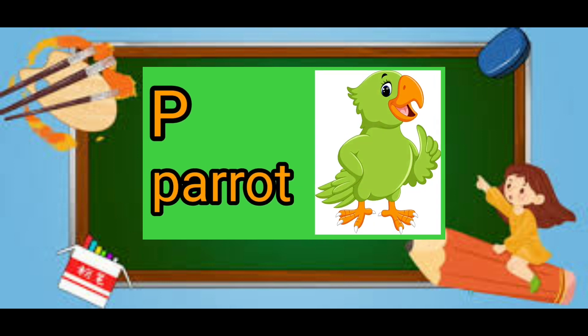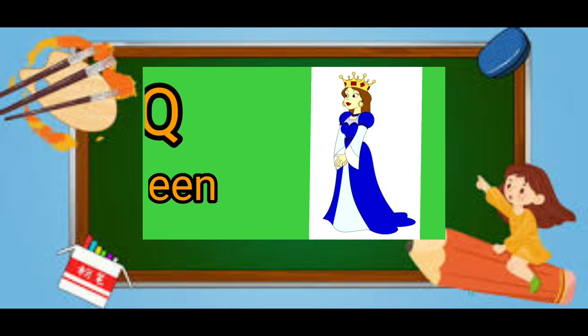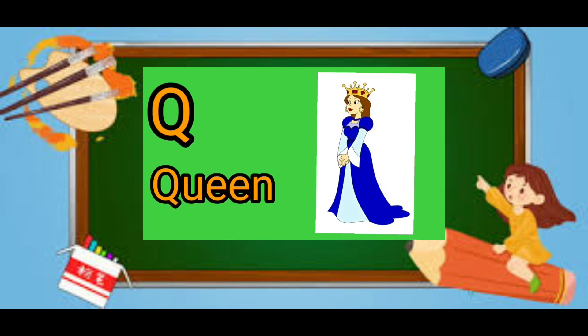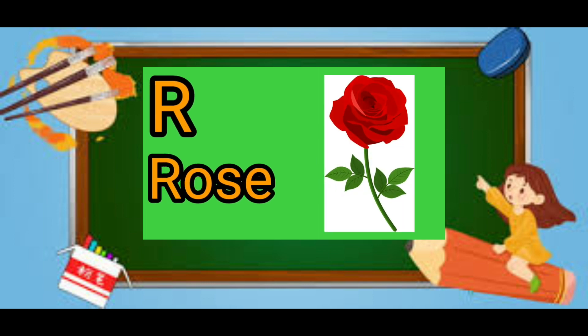P for parrot, parrot means toota. Q for queen, queen means rani. R for rose, rose means gula.